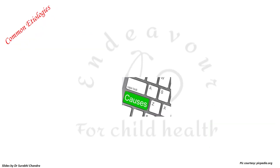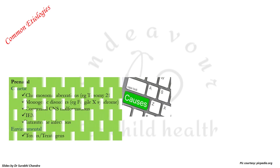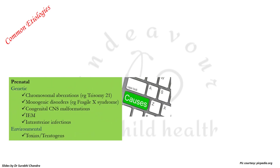The common etiologies seen in the prenatal period are genetic — for example chromosomal aberrations like trisomy 21, monogenic disorders like fragile X syndrome, congenital CNS malformations, inborn errors of metabolism, intrauterine infections, and environmental causes like toxins or teratogens.